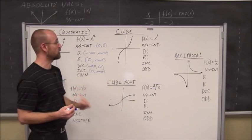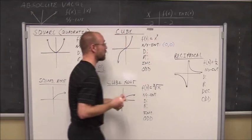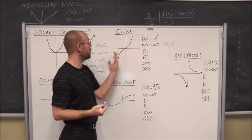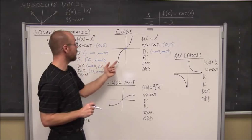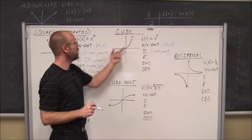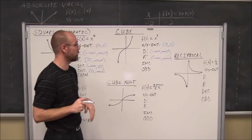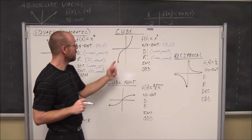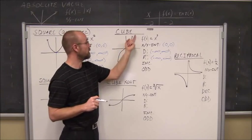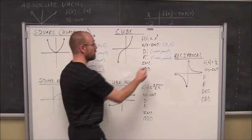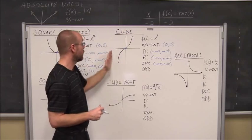The cubed function is f of x equals x cubed. The x and y-intercept is again the origin. Its domain is negative infinity to positive infinity, since we can put any value of x in. The range is also negative infinity to positive infinity, because the function continues down to negative infinity and up to positive infinity. This function is always increasing — the interval of increase is the entire real line, from negative infinity to positive infinity.